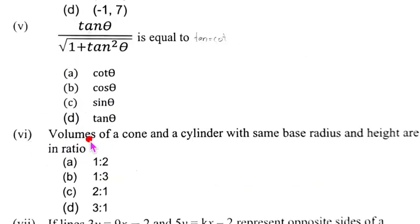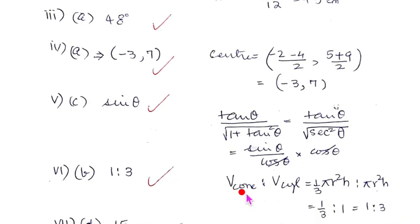The sixth question: volume of a cone and a cylinder with the same base radius and height are in the ratio? This is the choice which is given. Now cone and the cylinder they are having the same radius and height. So we will have to show the working.